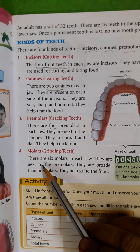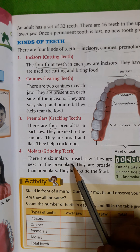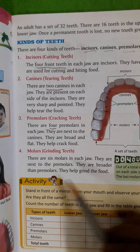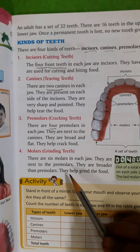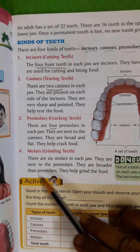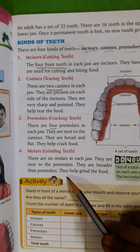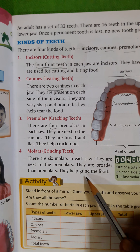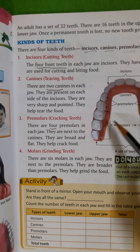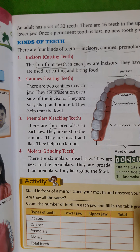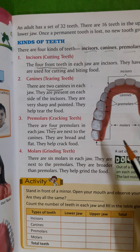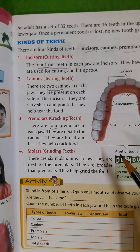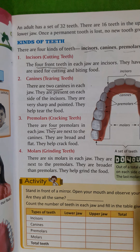The last type is the molar — the grinding teeth. There are six molars in each jaw, next to the premolars, and they are broader than the premolars. They help in grinding the food. You can see the molar teeth here — three on the left side and three on the right side, making six in the lower jaw and six in the upper jaw.